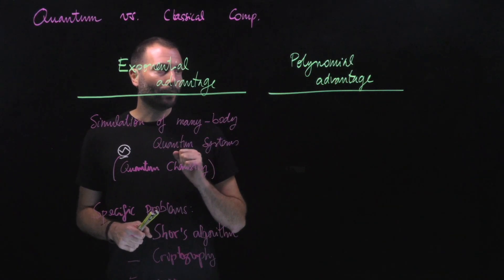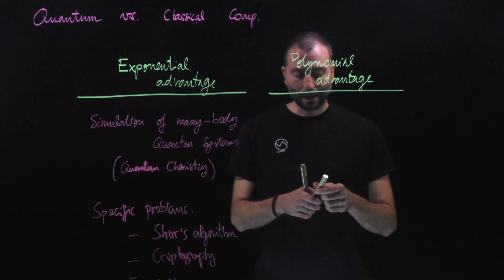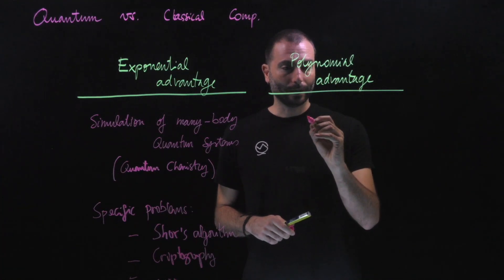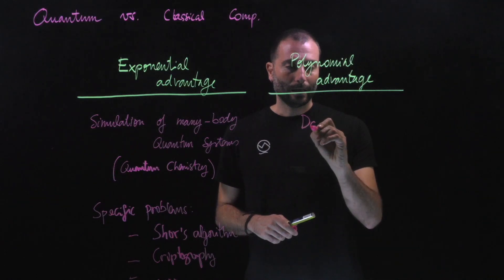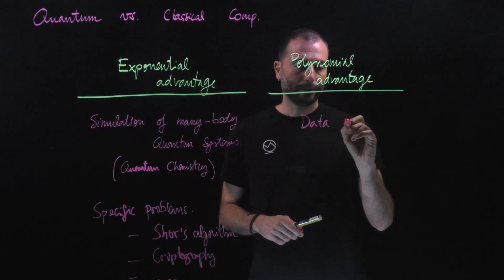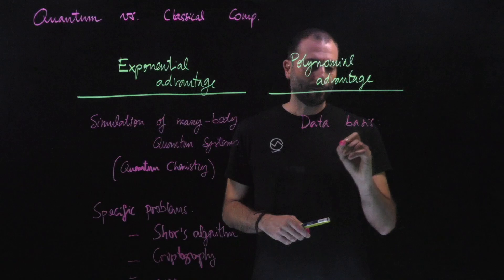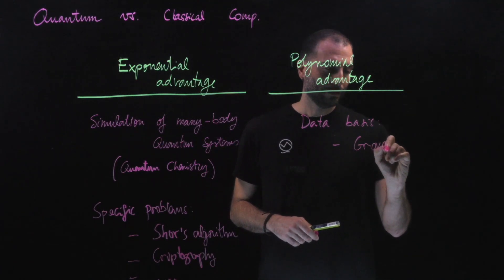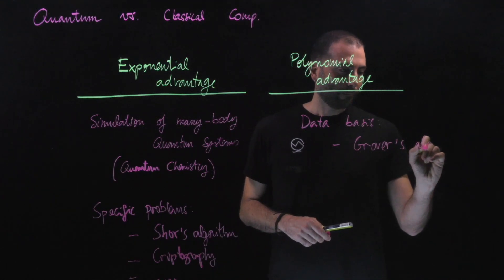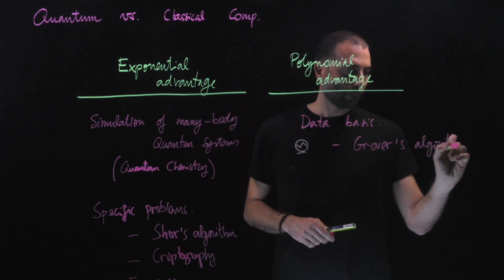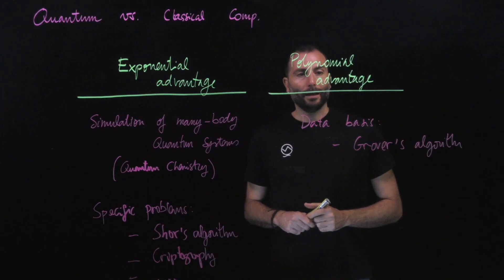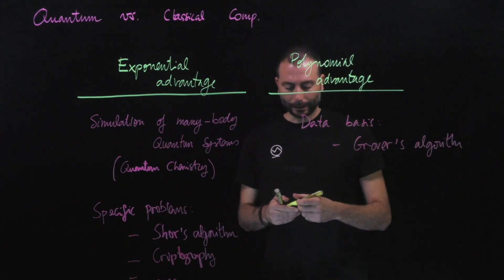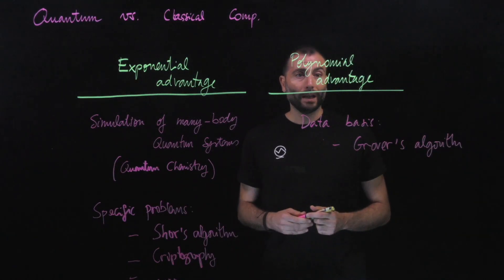What about polynomial advantage? One example of polynomial advantage would be searching databases. Grover's algorithm is the main example.